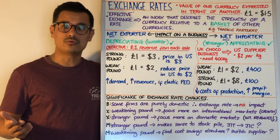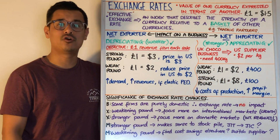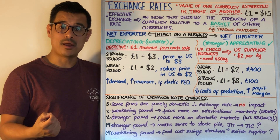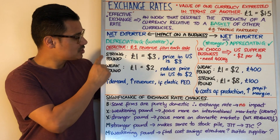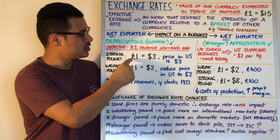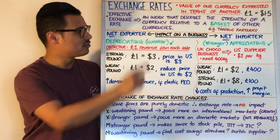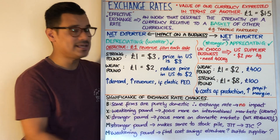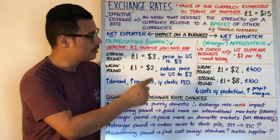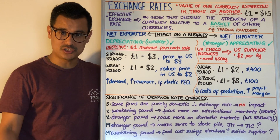Let's give a numerical example. A business has an objective of one pound revenue from each sale — they're a UK business and care about their numbers in pounds. In the situation where there's a strong pound, the exchange rate is one pound equals three dollars. If the business wants to earn one pound revenue from each sale, it's going to have to set the price in the US at three dollars.